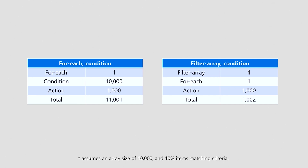The second option incurs one billable event for filter array, one for for-each, and only 1,000 action executions — a total of 1,002. That's a 10x difference. By tweaking the Logic App just a little bit, we've lowered the cost tenfold. Consider this approach depending on your data and scenario.